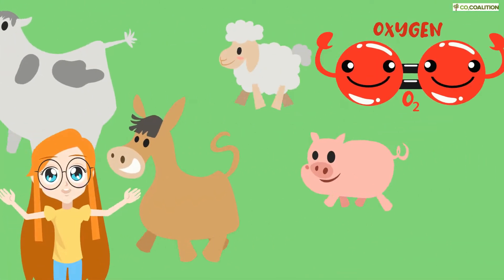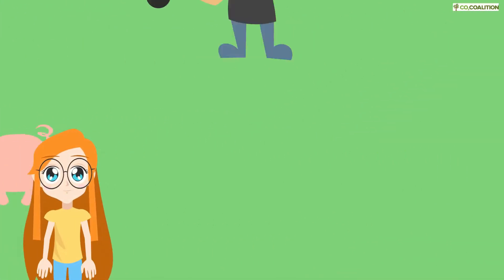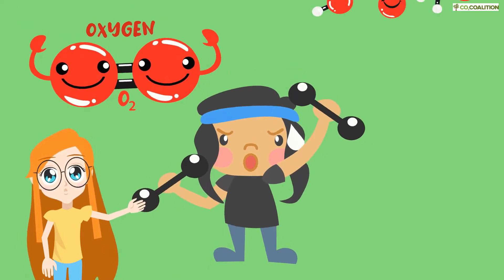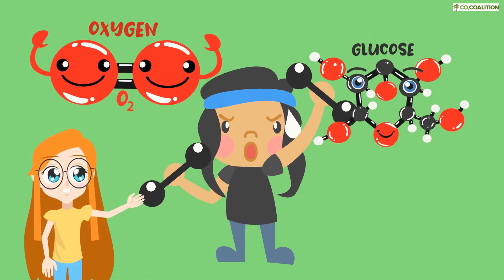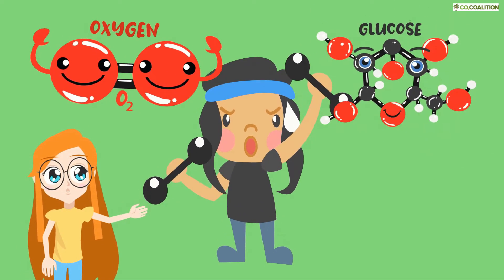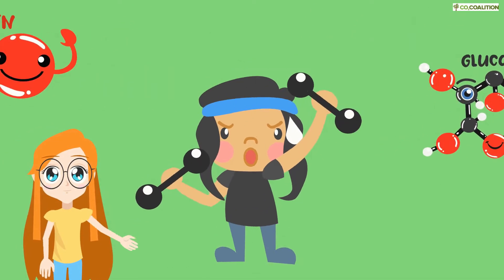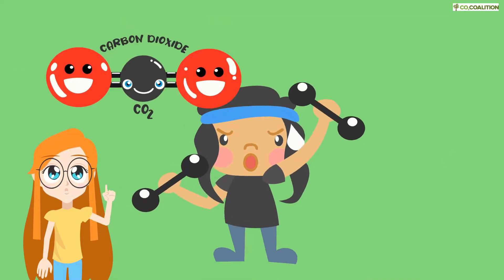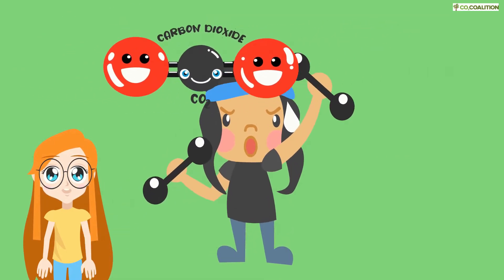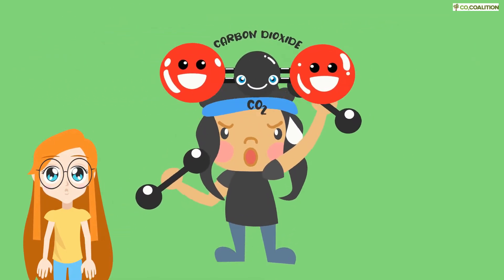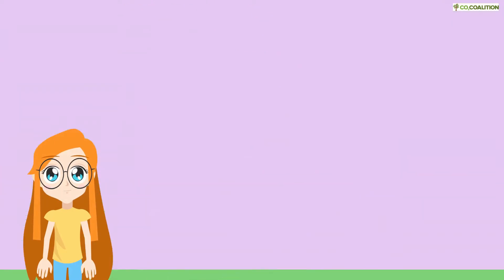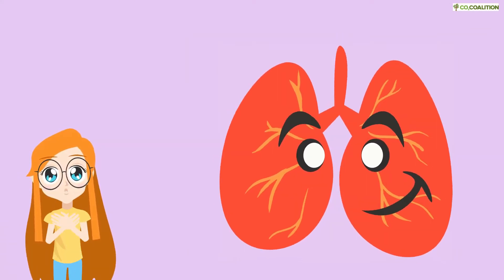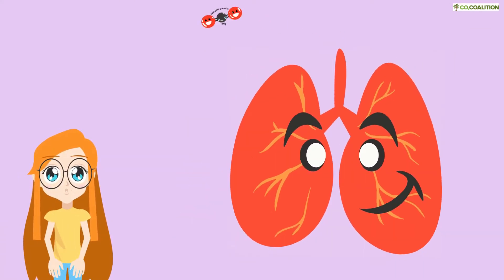Oxygen is used by all animals. Body cells combine oxygen and sugar to generate the energy for muscles. A byproduct of this is carbon dioxide. Our cells expel it into the bloodstream. When it reaches the lungs, it is exhaled.